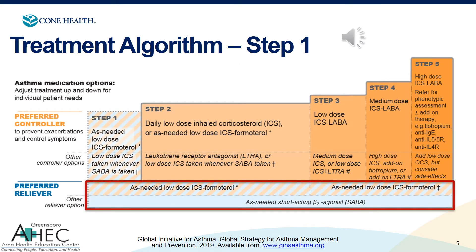One of the big shifts in the 2019 guidelines is that albuterol is no longer the only option as the preferred reliever. We now also have as-needed low-dose ICS-formoterol — a corticosteroid plus formoterol — specifically Symbicort, which was the medicine studied in the SIGMA trials that brought us these new recommendations. In those trials, patients used Symbicort as both their preferred controller and their preferred reliever, and they saw a reduction in exacerbations with fewer side effects from corticosteroids compared to patients taking a corticosteroid every day.